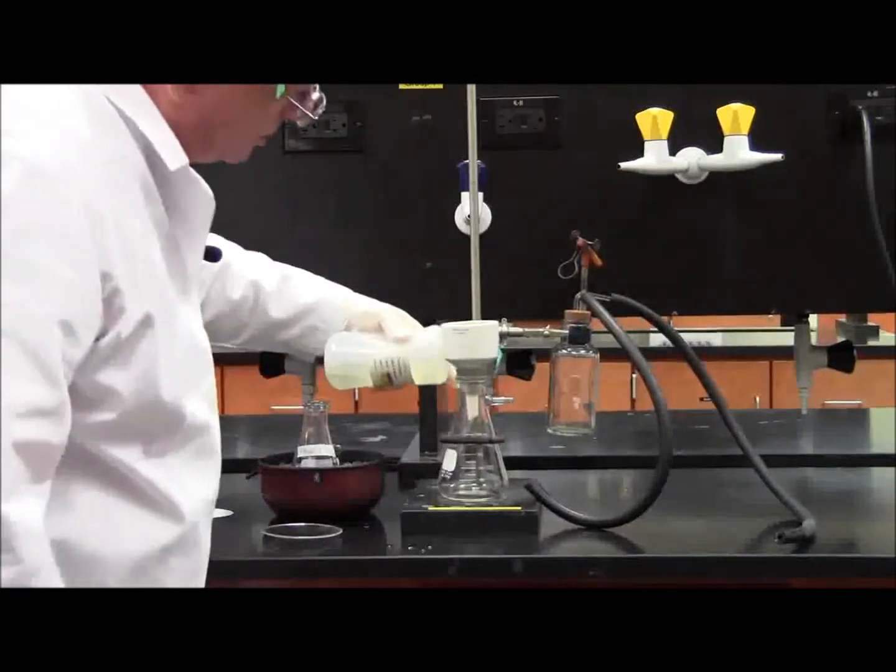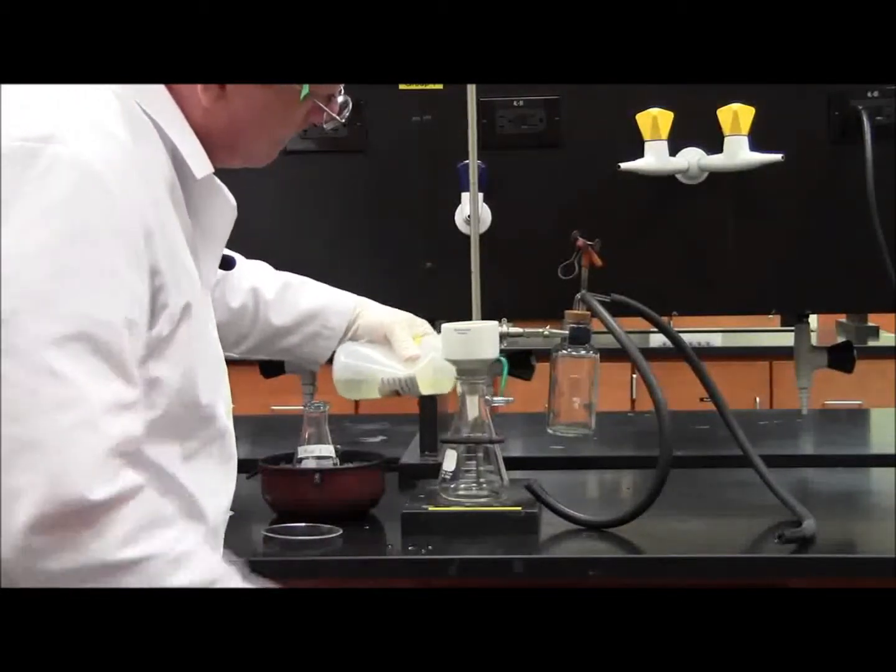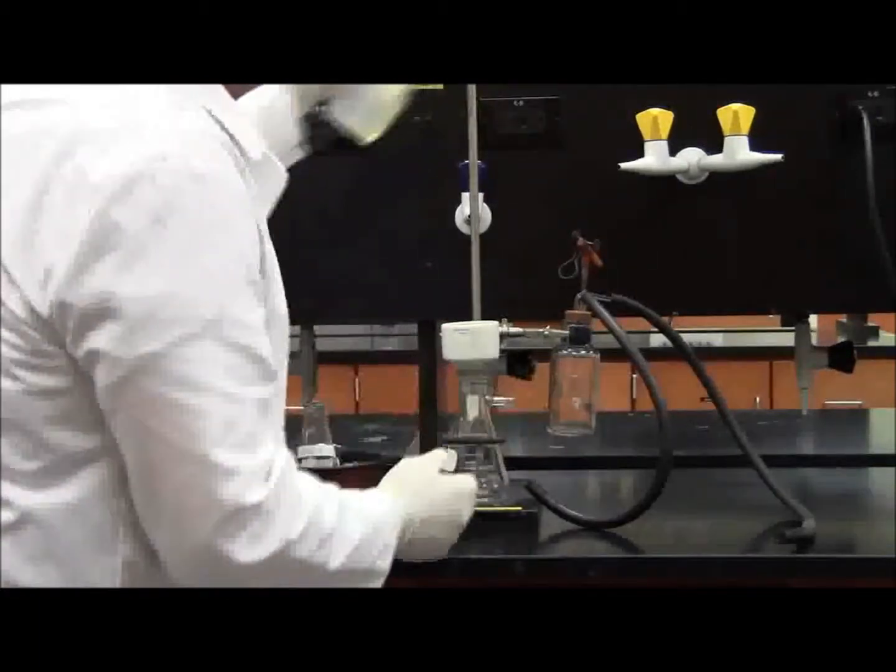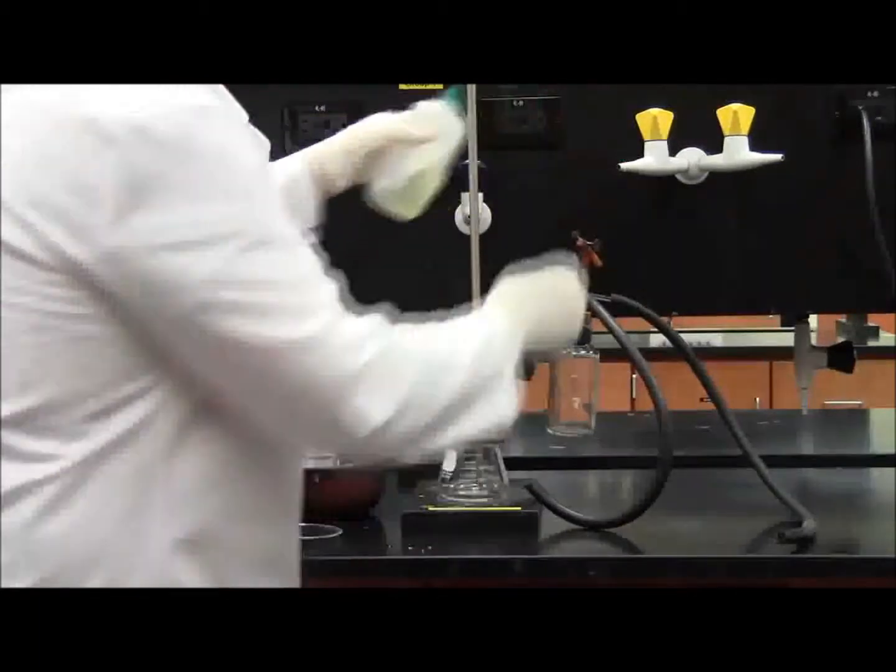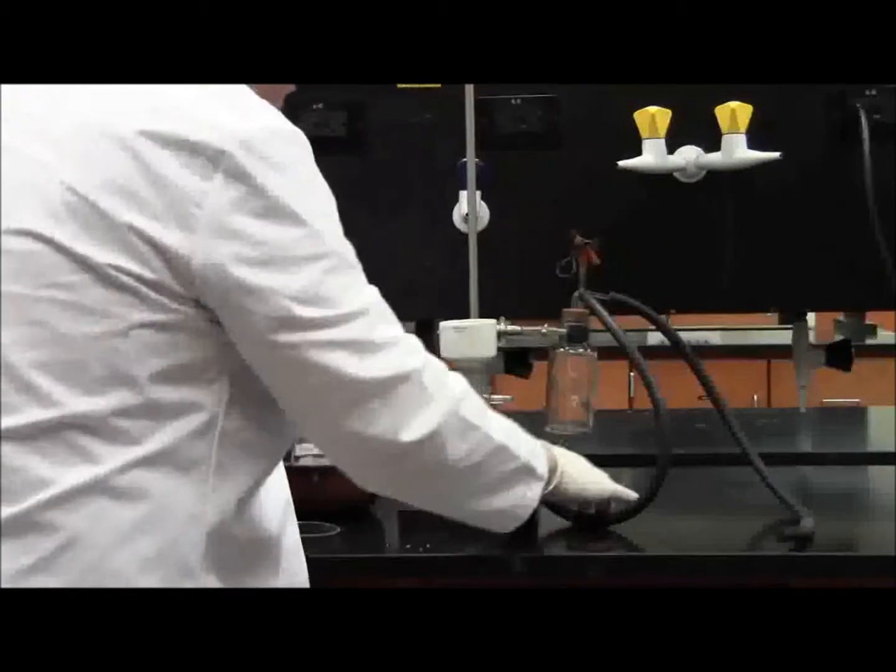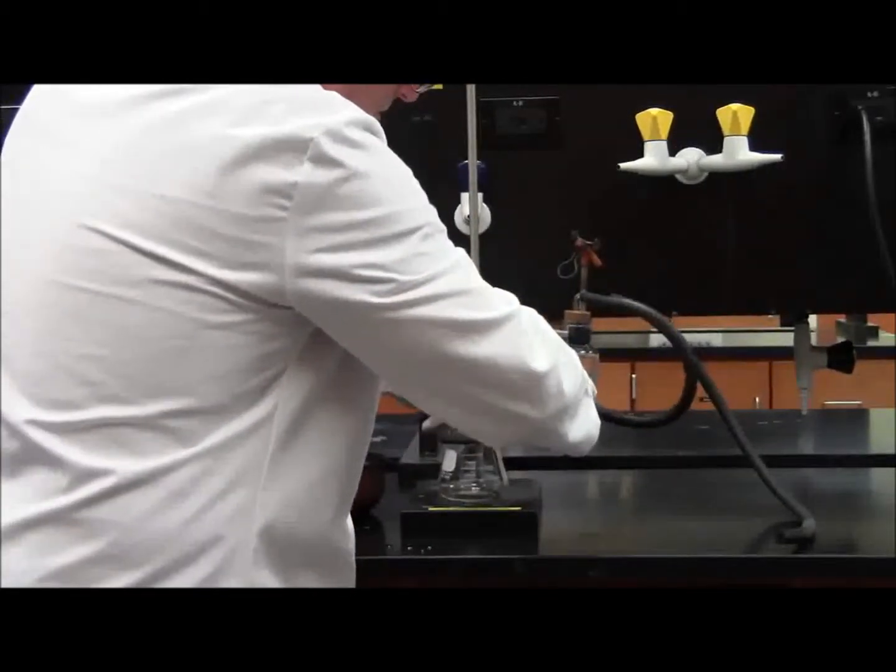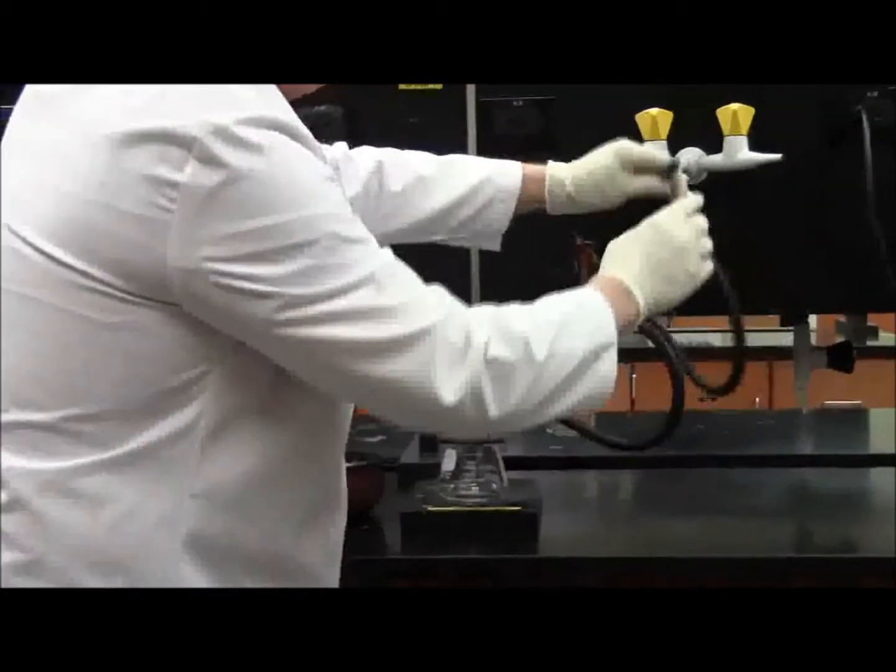To do this, you're going to want to use a little glycerin, put it around. This way, the vacuum hose will go on easy and it will come off easy.